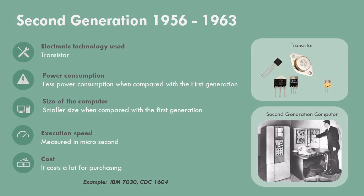2nd generation, 1956 to 1963. Transistors were used as electronic technology in the 2nd generation. They consumed less power compared to 1st generation computers, and the size of the computer was smaller than 1st generation. Execution speed was measured in microseconds, and it cost a lot for purchasing. Examples include IBM 7030 and CDC 1604.